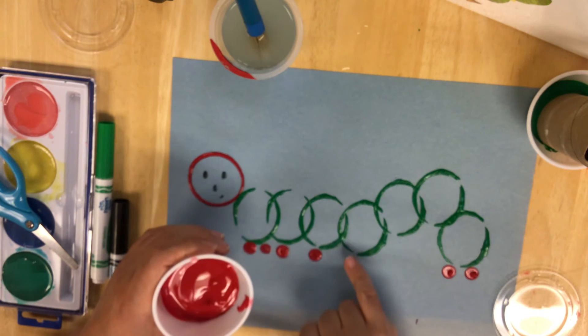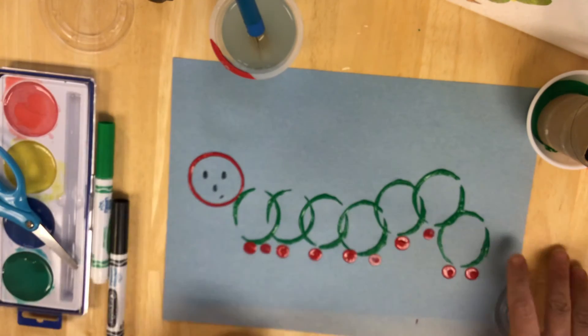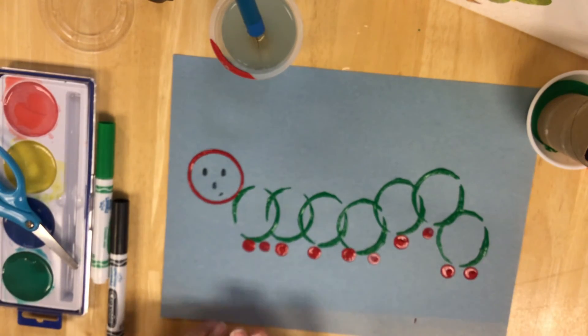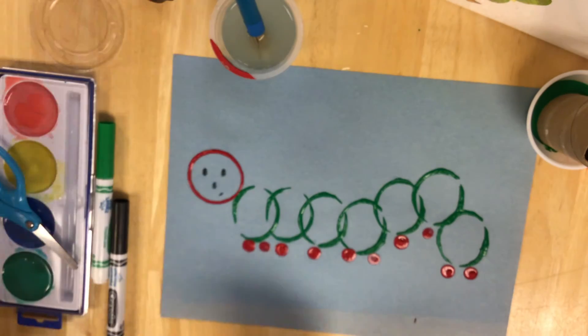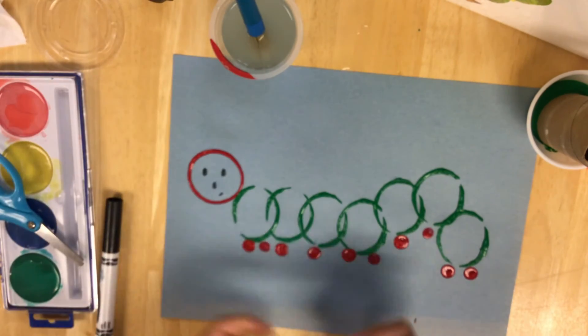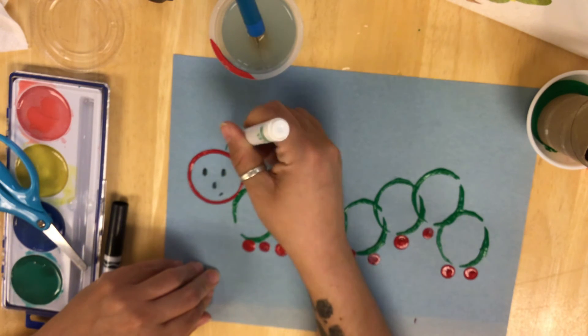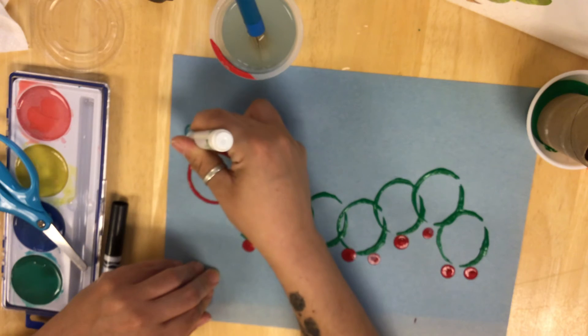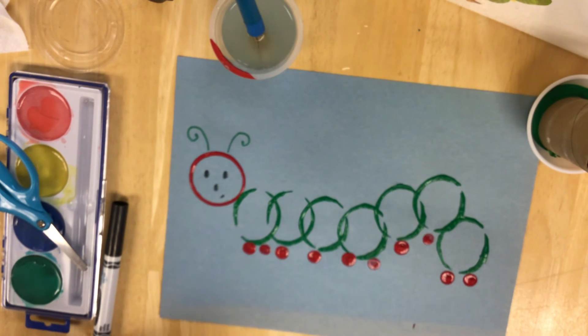Ta-da. There. I dig it. So he's got a little red feet and then I can take my green marker or you can take some other paint, whatever you want to use. Got leftover pipe cleaners would be awesome. And I'm gonna give him some little antennas. And there, there is my little caterpillar.